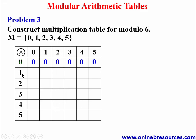We go to the row of 1: 1 times 0 is 0, 1 times 1 gives 1, 1 times 2 gives 2, 1 times 3 gives 3, 1 times 4 gives 4, 1 times 5 gives 5. We are done with the row of 1.